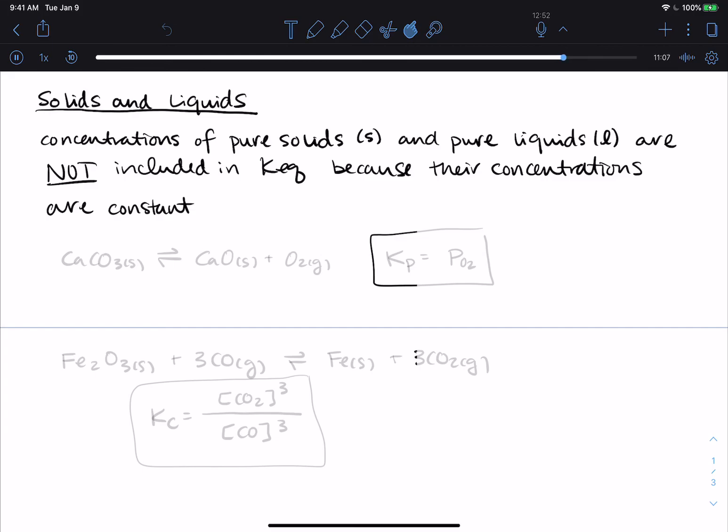For the reaction, CaCO3 solid in equilibrium with CaO solid and O2 gas, I can write a KP for this reaction because I've got two solids and a gas. The only thing that shows up in my expression is the gas. So products over reactants, it's going to be the pressure of O2 gas. The CaO is a solid, so it doesn't show up. The reactants are also solid. So this is my entire equilibrium constant expression for this reaction. I could write it as a KC as well.